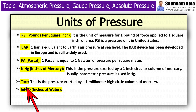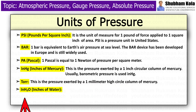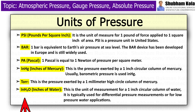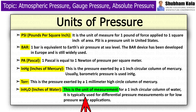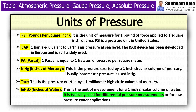Next is torr. This is the pressure exerted by a one-millimeter high circular column of mercury. Next is inH2O, that is inches of water. This is the unit of measurement for a one-inch circular column of water. It is typically used for differential pressure measurements or low-pressure water applications.